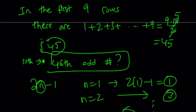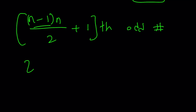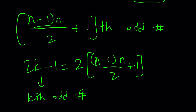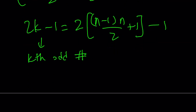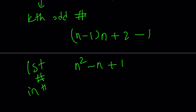So using the formula 2k minus 1, where k equals n(n-1)/2 plus 1, we compute: 2 times [n(n-1)/2 + 1] minus 1. The 2s cancel, and distributing gives us n(n-1) plus 2 minus 1. Simplifying, we get n squared minus n plus 1. This is the formula for the first number in the nth row.